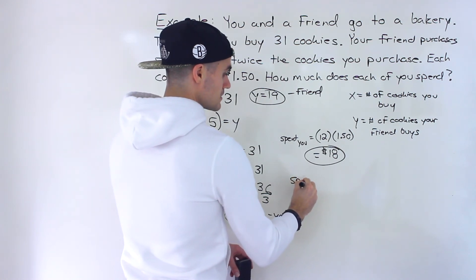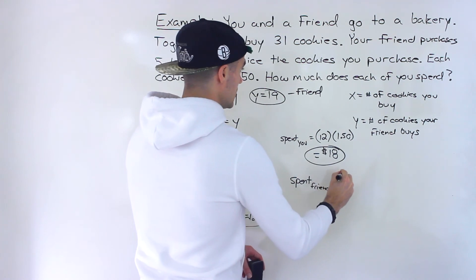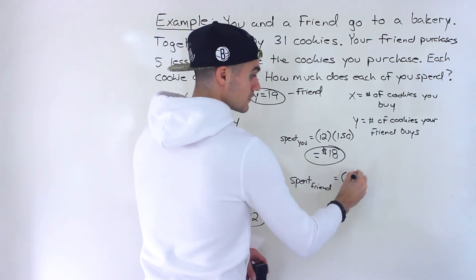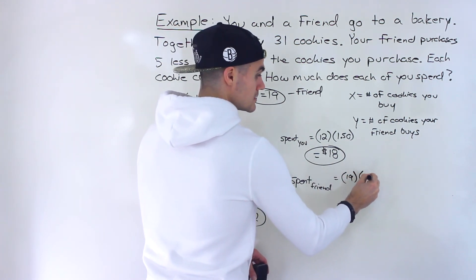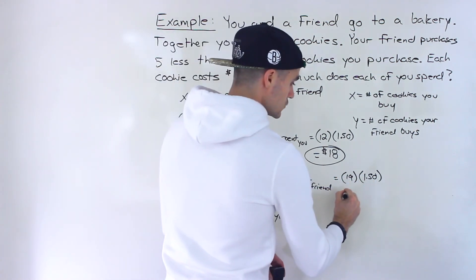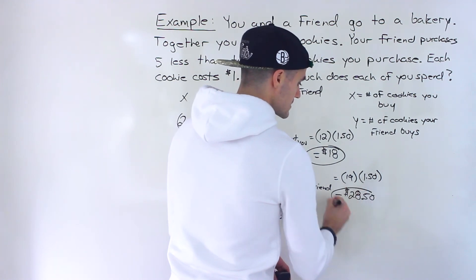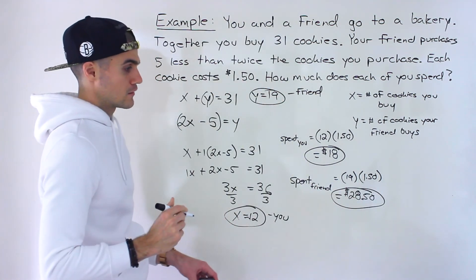And then the amount spent by your friend would be the 19 cookies that they buy times the 150 per cookie. And then that there would give you $28.50. So that's the amount spent by your friend.